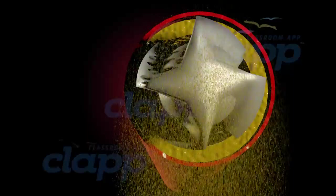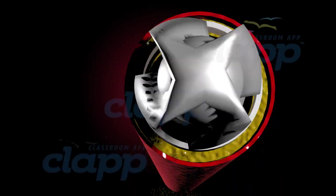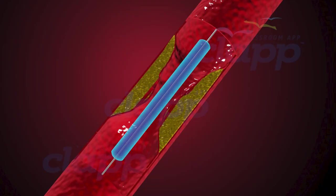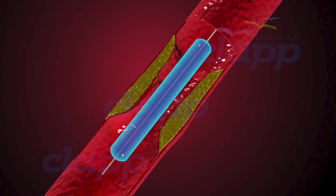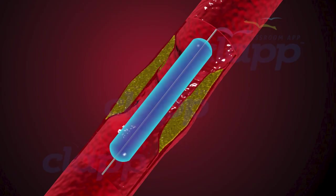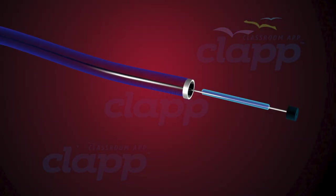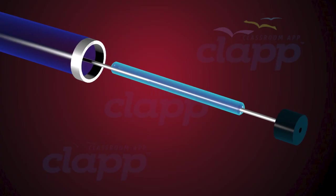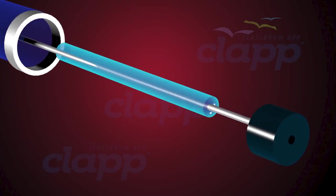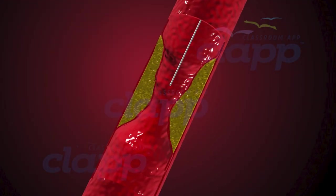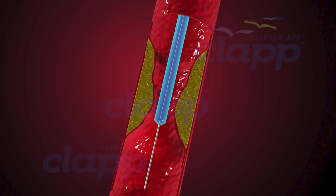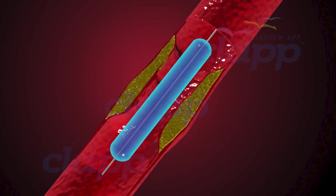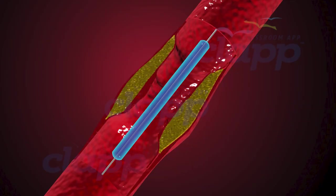Angioplasty is a medical procedure used to widen narrowed or blocked arteries. First, we have balloon angioplasty, also known as percutaneous transluminal coronary angioplasty (PTCA). The balloon catheter — a fundamental tool in angioplasty — consists of a thin tube with an inflatable balloon at its tip, carefully positioned within the narrowed artery. Once the guiding catheter is in place and the balloon catheter is advanced to the targeted area, the balloon is gently inflated with utmost precision, compressing the plaque against the artery walls, widening the vessel and restoring proper blood flow to the heart.